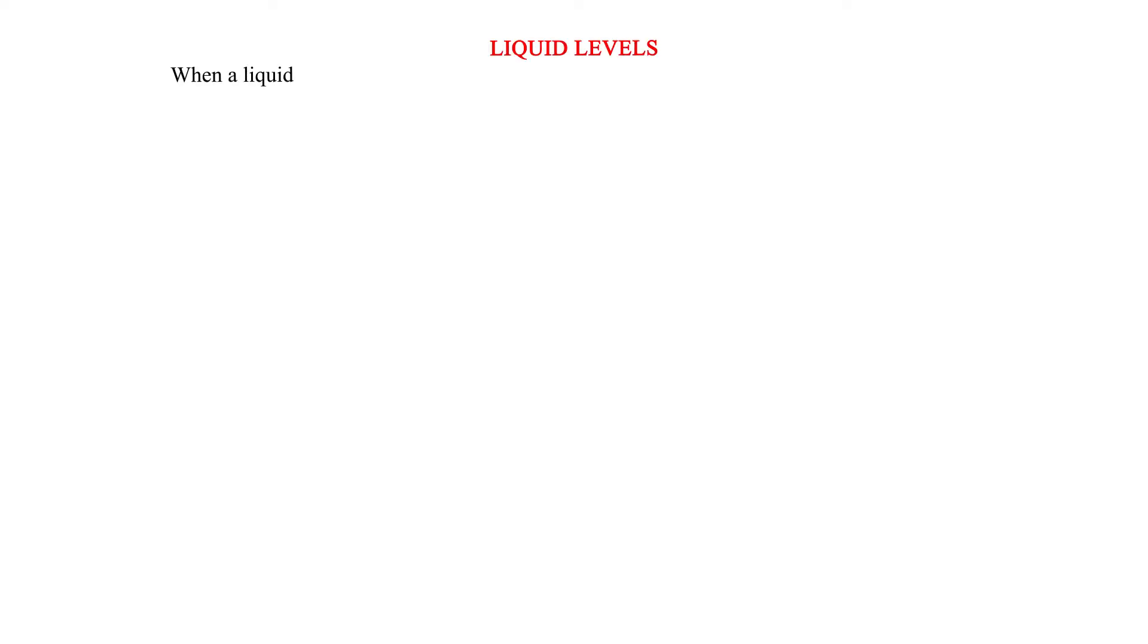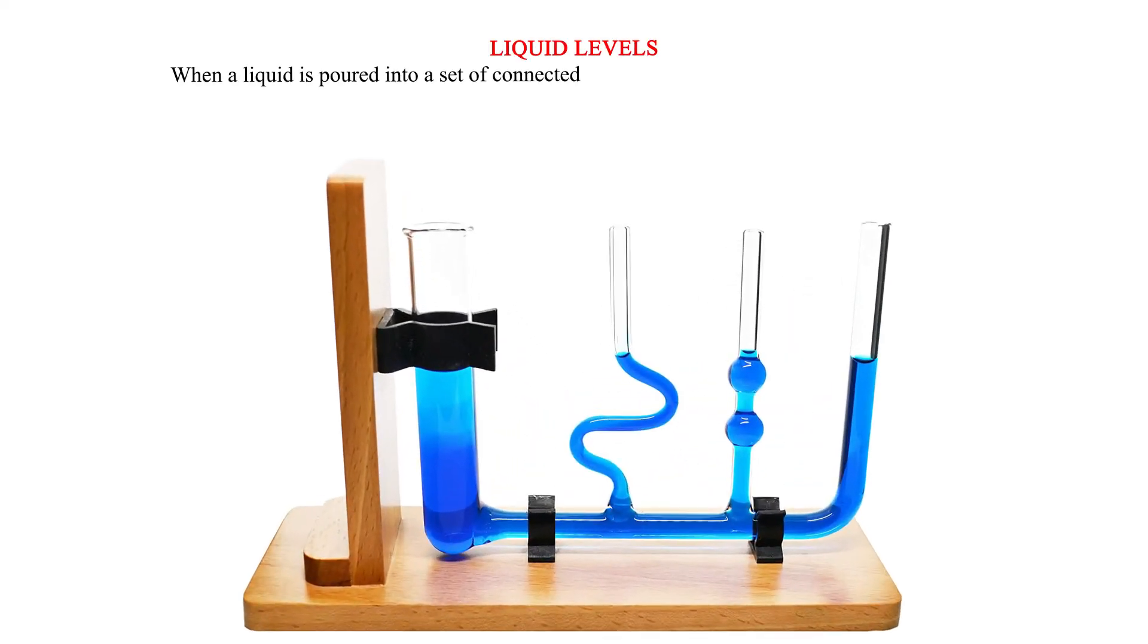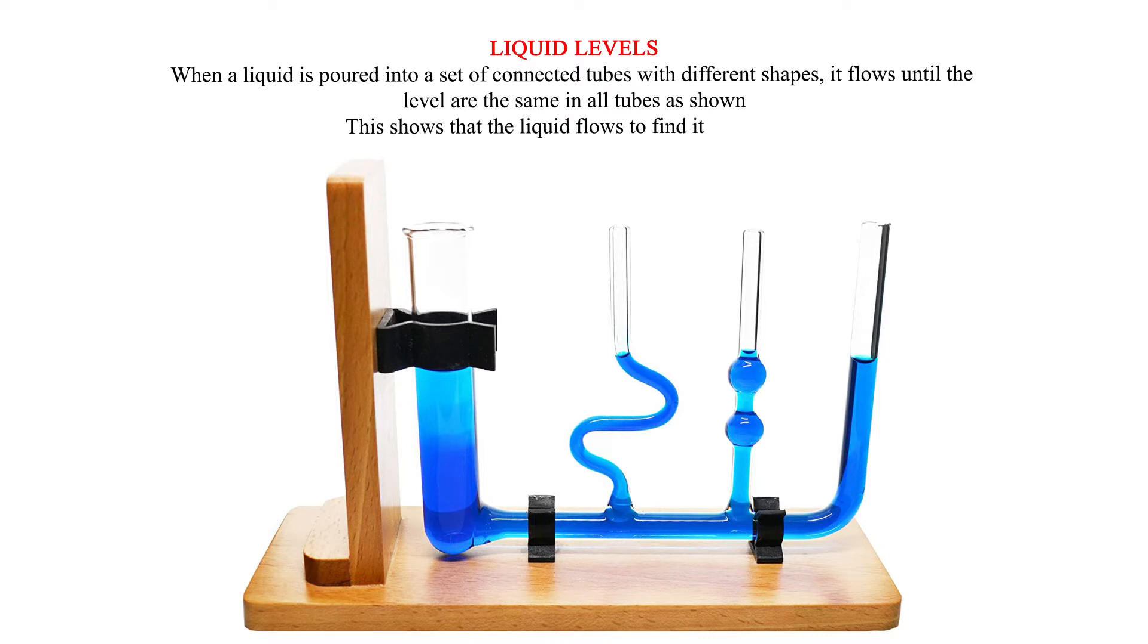Liquid levels: When a liquid is poured into a set of connected tubes with different shapes, it flows until the levels are the same in all tubes. This demonstrates that liquids flow to find their own level.